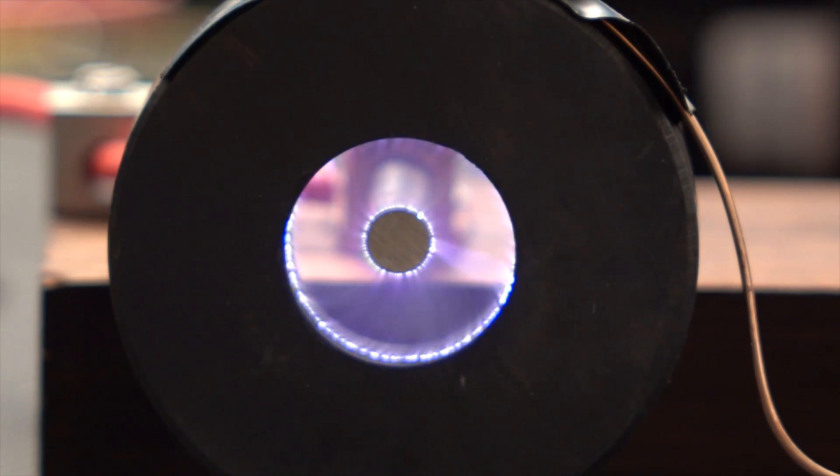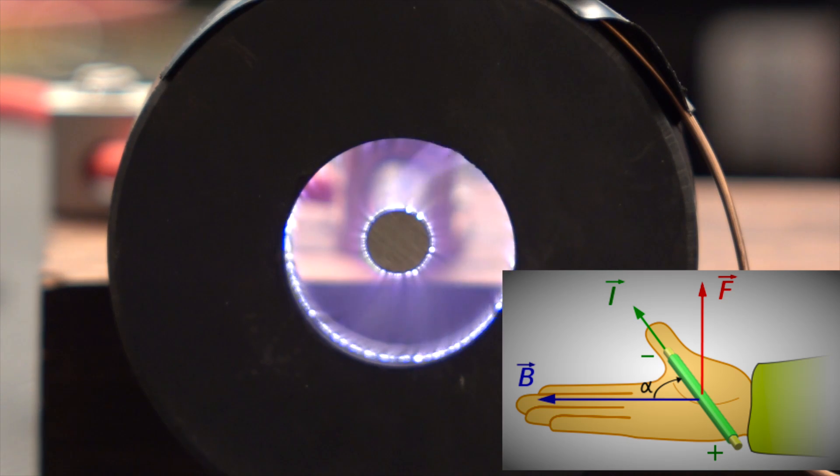What we'll use to determine the direction of rotation is called the right hand rule. Using your right hand, point your thumb in the direction of the conventional current flow, which is from positive to negative. Now with your fingers pointing in the direction of the magnetic field, the Lorentz force applied to the moving electric charge will be in the direction that the palm of your hand is facing.